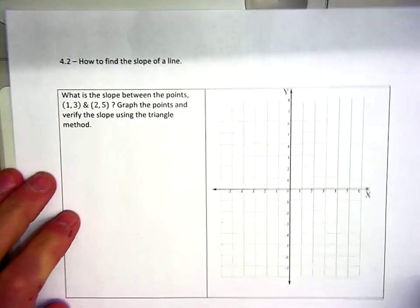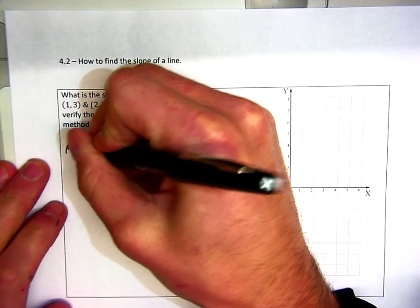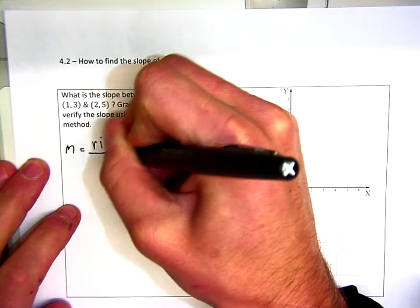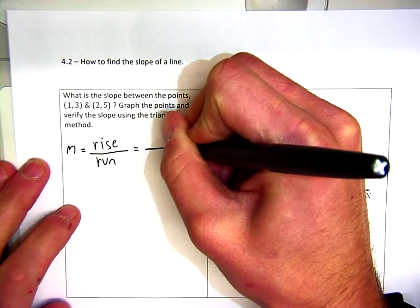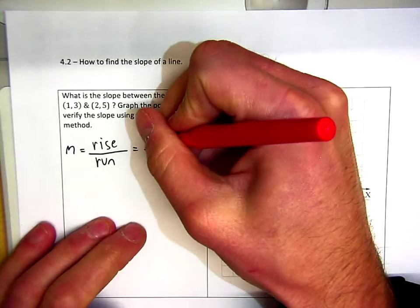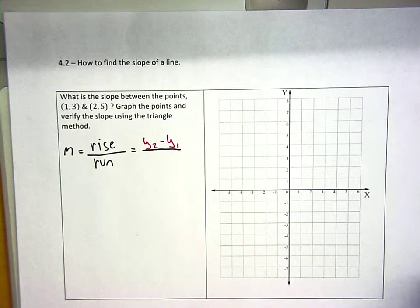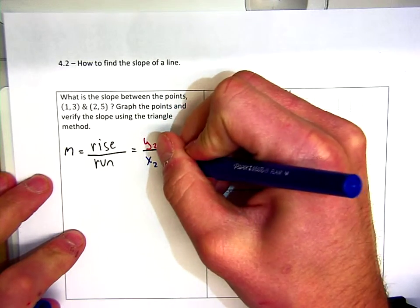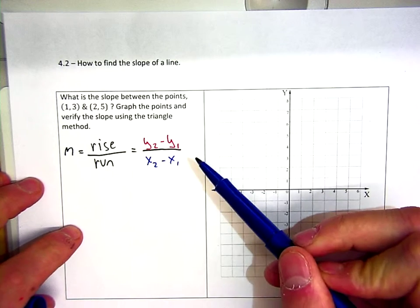First off, we have the slope formula. We use the letter m as the variable to denote slope. The slope is the ratio of rise over run. We can use the slope formula because our change in y determines the rise, found by y2 minus y1, and our change in x determines the run, found by x2 minus x1. It is important that you always have the y's on top and the x's on the bottom — it does make a difference.